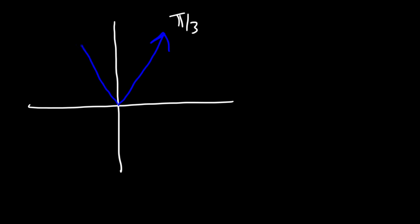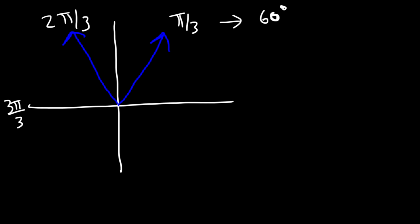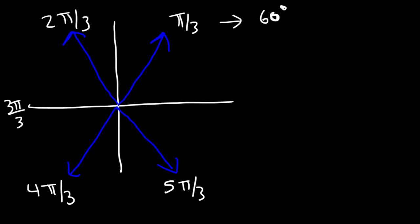Next, the π over 3 family. Since 180 divided by 3 is 60, π over 3 is 60 degrees in quadrant 1; 2π over 3 is 120 degrees in quadrant 2; 3π over 3 simplifies to π which is 180; 4π over 3 is 240 degrees in quadrant 3; and 5π over 3 is 300 degrees in quadrant 4. The common ones you'll see are π over 3, 2π over 3, 4π over 3, and 5π over 3.